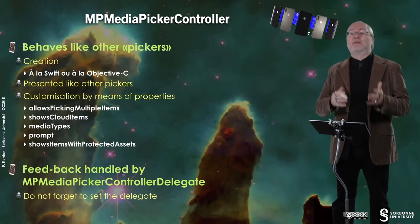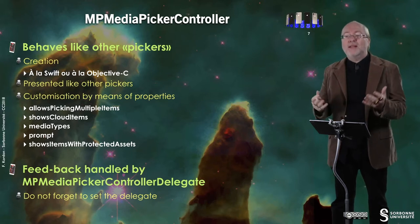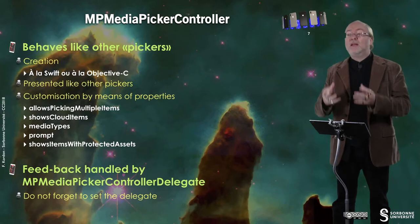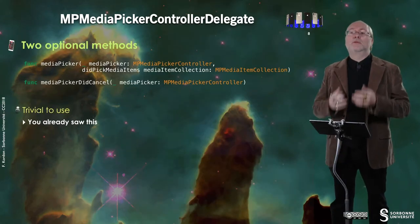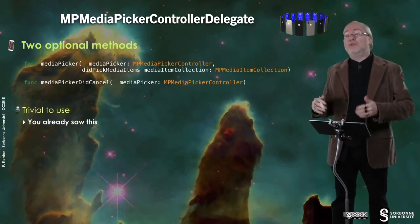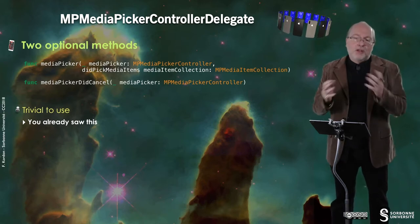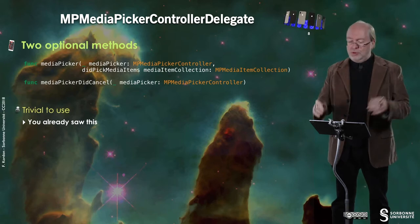The feedback of an MPMediaPickerController is handled by an MPMediaPickerControllerDelegate, which is a protocol you must set a delegate for. The delegate is not too complex — there are basically two optional methods: the first deals with the user having selected items (one or multiple tracks depending on the attribute), and the second deals with the user cancelling. It's quite trivial to use, very similar to what we've seen a few videos ago.